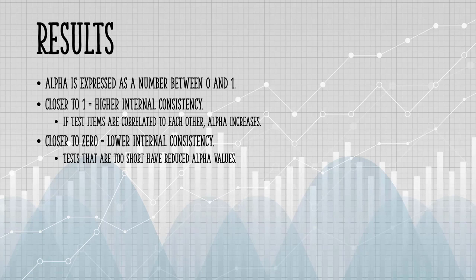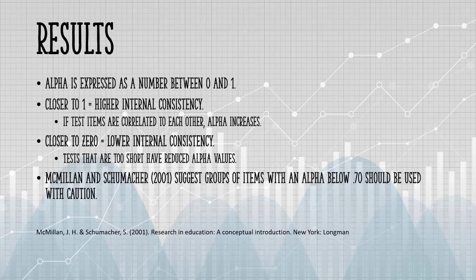So what is a good alpha level? Macmillan and Shoemaker suggest that if your groups of items have an alpha of below 0.7, you should use those groups of items with caution.